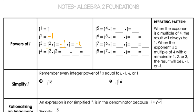So that gives negative i. i to the fourth is i squared times i squared. Since i squared is negative 1, and i squared is negative 1, that gives me a positive 1 answer. The pattern that's happened here — where the answer was i, negative 1, then negative i, then positive 1 — repeats.